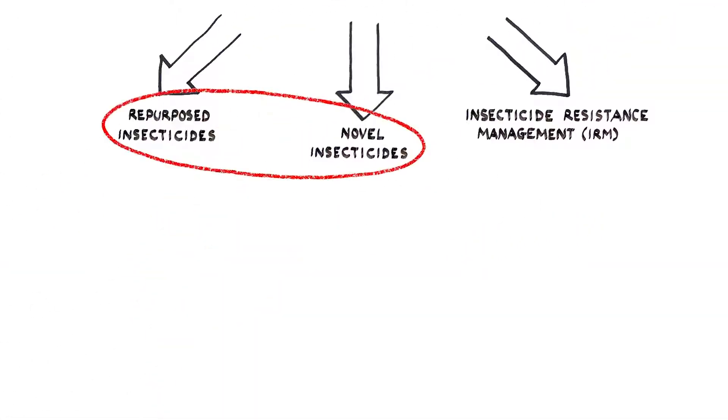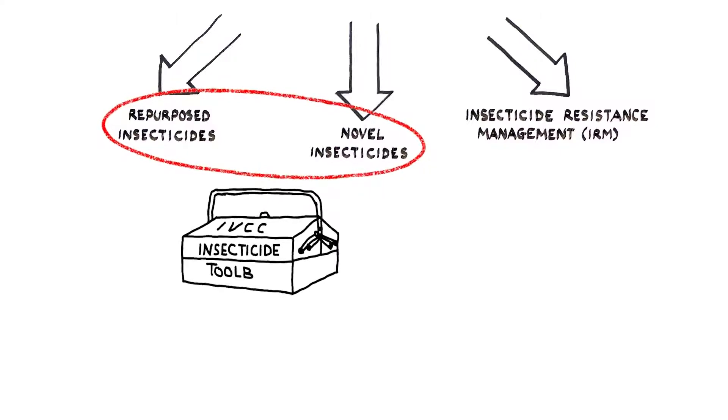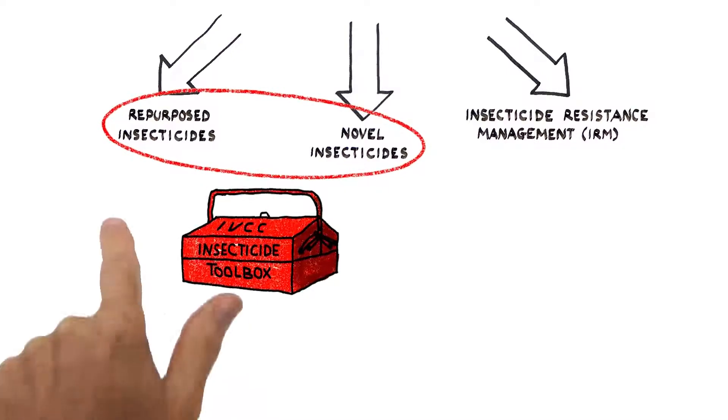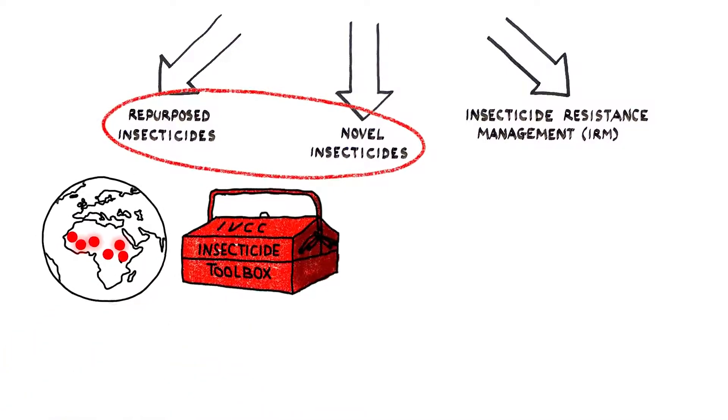Both repurposed and novel insecticides are essential components of IVCC's product portfolio, as we aim to build a toolbox of products which can be deployed in a sustainable way to combat the ever-present threat of insecticide resistance. How this toolbox of insecticides is used will play a major role in how we eradicate malaria globally.